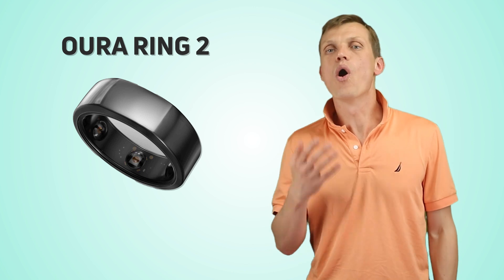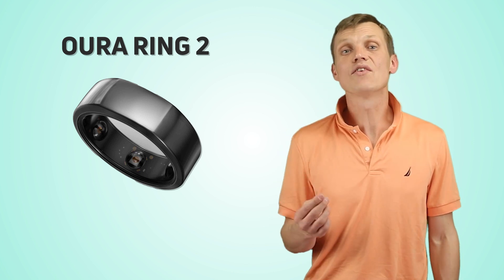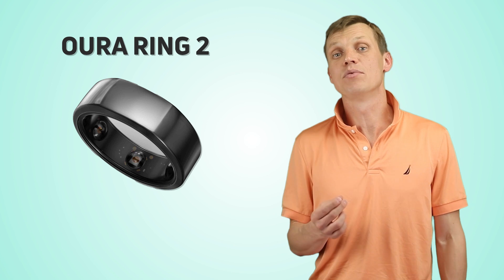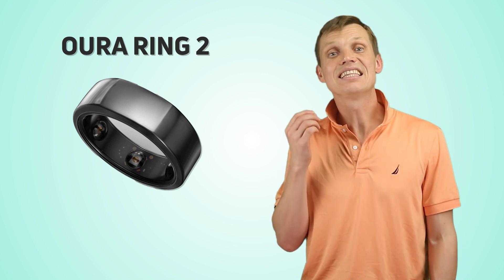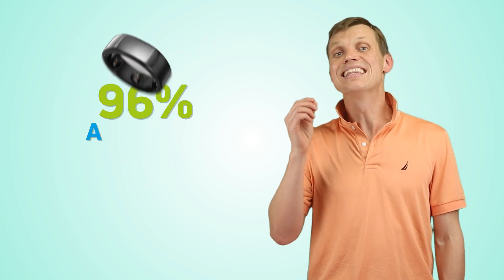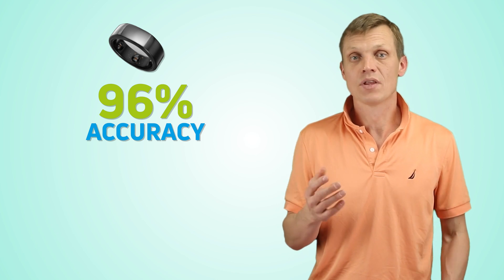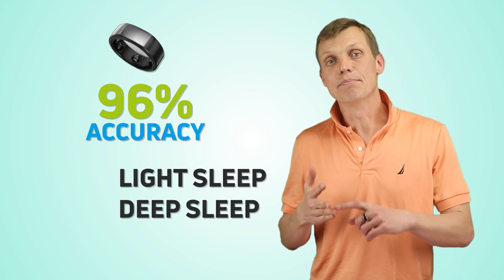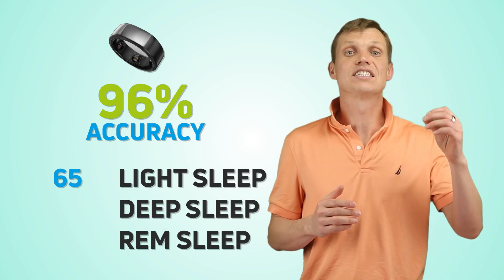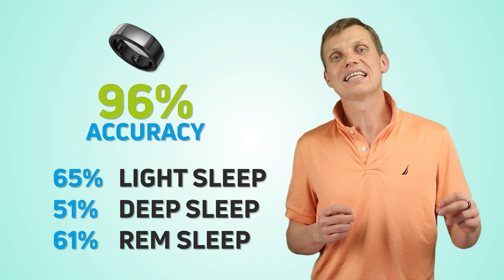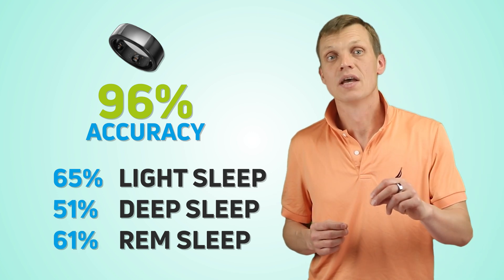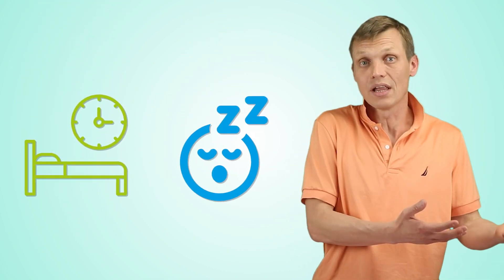Even though Oura Ring 2 is considered one of the most accurate sleep tracking devices available on the market today, it detects sleep with only 96% accuracy, light sleep, deep sleep, and REM sleep with only 65%, 51%, and 61% accuracy, respectively. As it stands, some indicators like bedtime and total sleep time are quite reliable, but other metrics like deep sleep and REM are less precise.